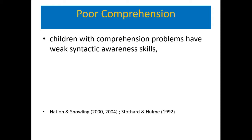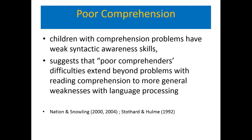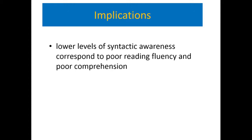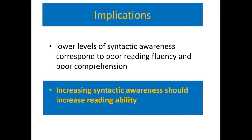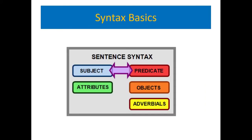Many studies show that children with comprehension problems have weak syntactic awareness, suggesting that poor comprehenders have difficulties extending beyond reading comprehension to more general weaknesses with language processing. These problems are language processing problems, not just word recognition or fluency problems fixable by choral reading. The reason kids can't read with good intonation is because they're reading according to their own simpler syntax, trying to make the text fit a syntactic pattern that doesn't match the complex one written there. So for the next few minutes, we'll do a quick tutorial to remind you of syntactic complexity.